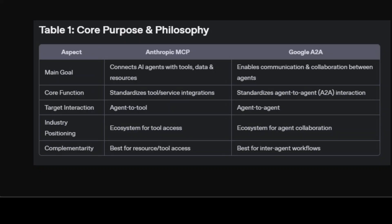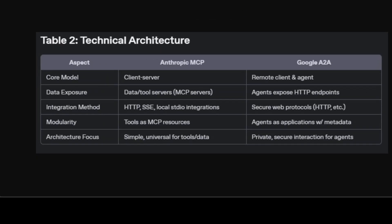A2A, by contrast, is built to help agents communicate and collaborate directly with one another. It's less about plugging into a tool and more about enabling back-and-forth dialogue and negotiation between fully autonomous agents. In short, MCP is about connecting to what an agent needs to get a task done, while A2A is about how agents work together to solve complex, multi-step problems.